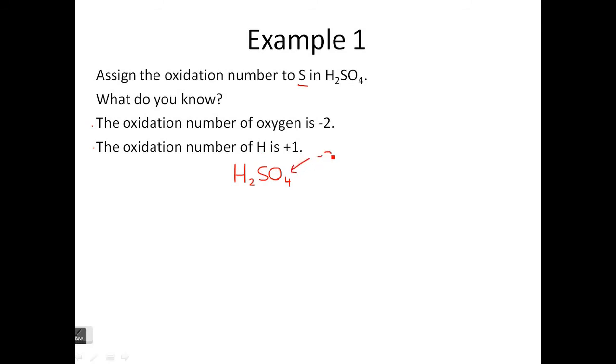So here we have H2SO4. Now we know that the oxygen is negative two, and we also know there's four of them. So we multiply by four to give us negative eight. And then we also know the hydrogen is plus one, and we have two of them, which gives us plus two. Now, if we draw a scale like this.